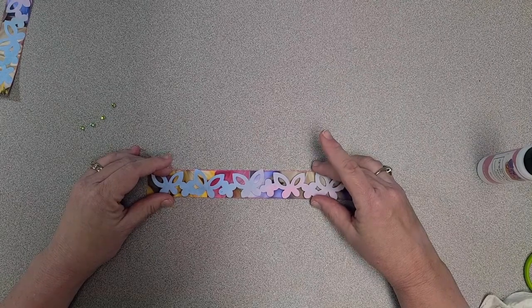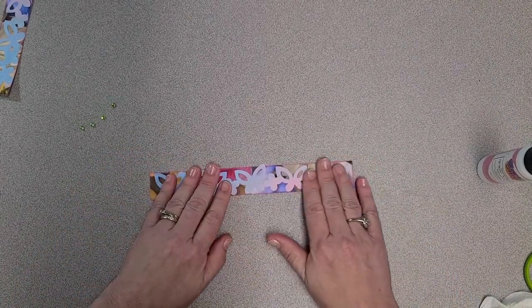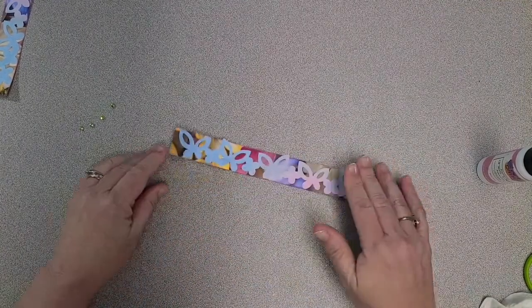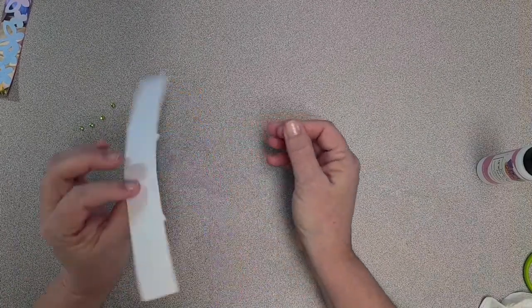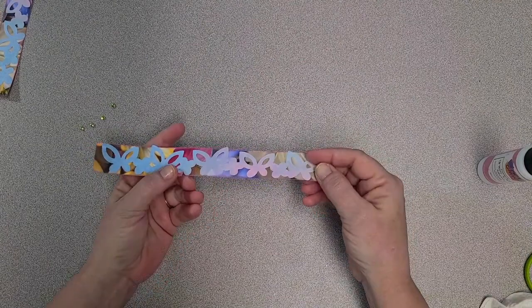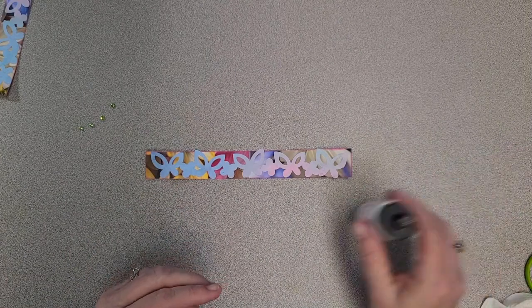All right, now my butterfly strip is a hair shade shorter than my nine inches. So I'm just going to center that as best I can. Glue it down, and you'll see I've got just the tiniest edge of some of the wings or the butterfly body poking over the edges.